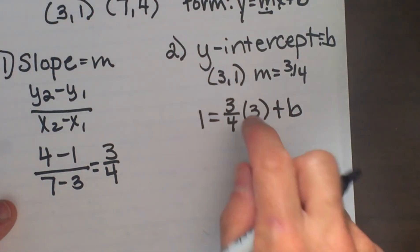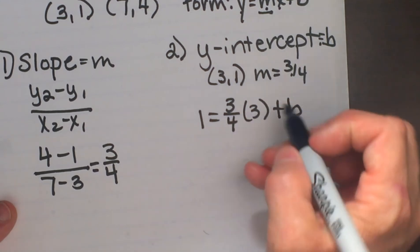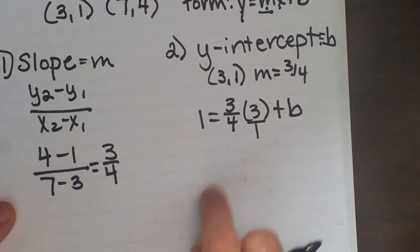So now I'm going to multiply 3/4 times 3. When you take a fraction times a whole number, stick a 1 under it and then just multiply top and bottom.